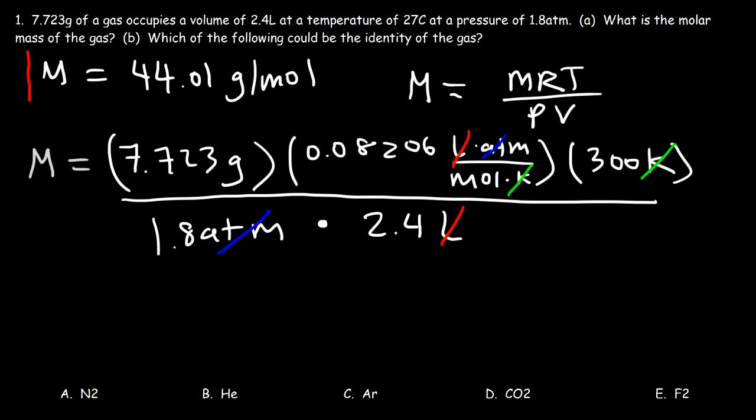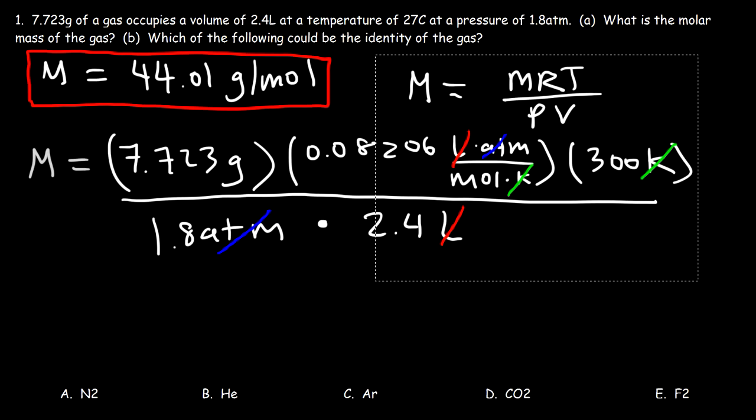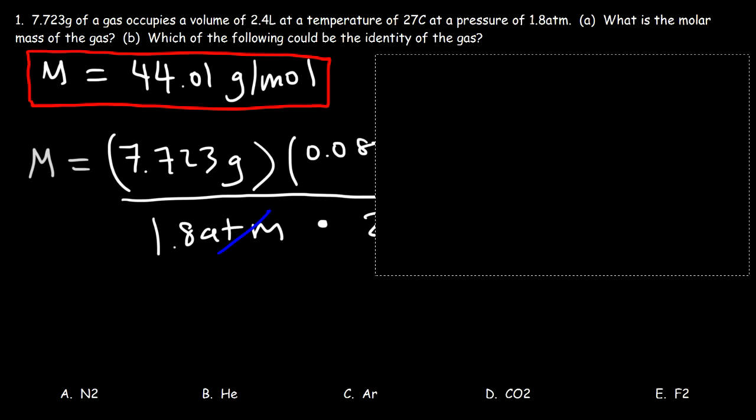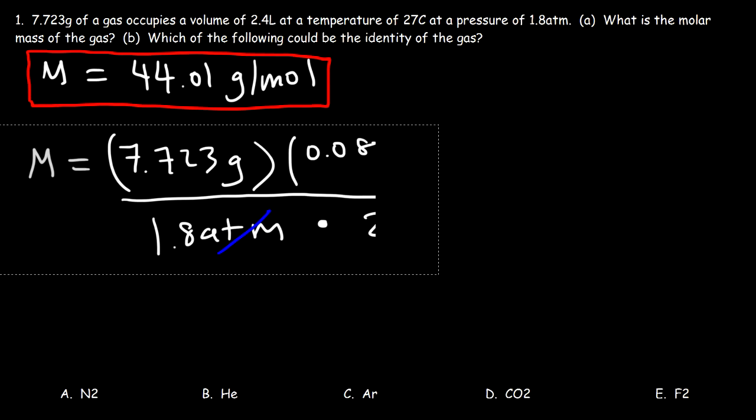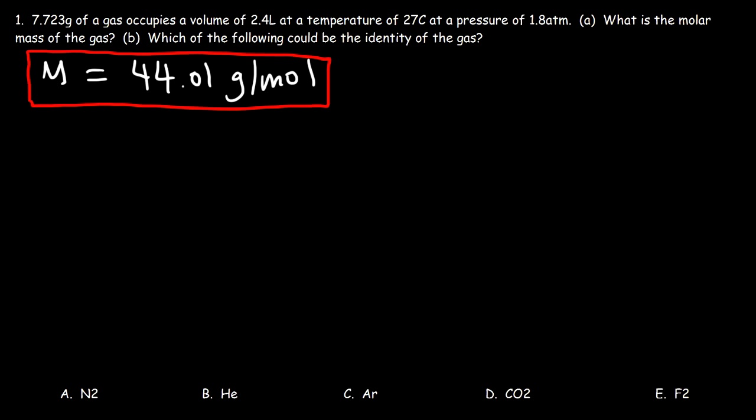Now, let's move on to part B. Which of the following could be the identity of the gas? What we need to do is calculate the molar mass of each gas listed below, and then see which one matches to 44.01.